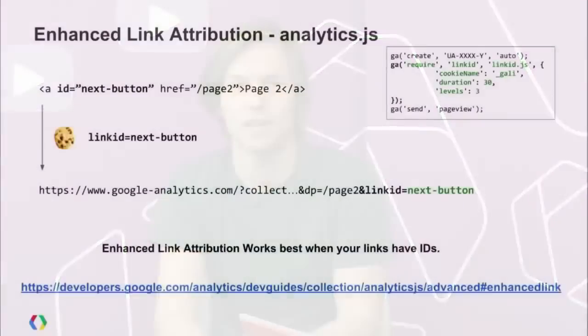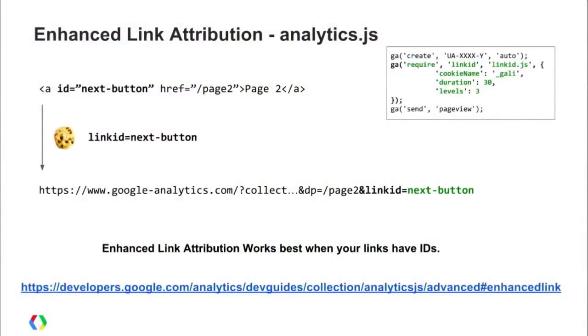On the next page, when the page view is sent, the element ID is included in the hit as part of the link ID parameter. This allows the in-page analytics report to identify that users came to a page not from some generic link, but from a specific element like a 'next' button. This is most accurate when all links have unique IDs, or at least their parent elements have unique IDs. You can also configure the cookie name, cookie duration, and how many levels up in the DOM to search for an element ID.